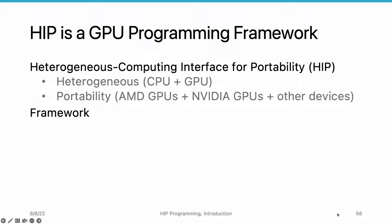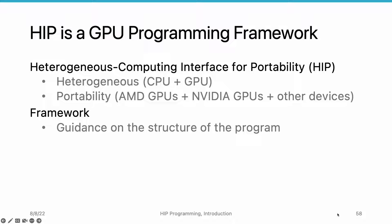We say HIP is a GPU programming framework. When I say a library or a tool is a software developing framework, I mean it can guide how to structure and write code to achieve desired goals. If you have developed a website before, you probably know React.js. If you follow the guidance provided by React.js, you can implement complex websites. It is the same for HIP. If you follow the guidance provided by HIP and write both CPU code and GPU code, you should be able to deliver a high-performance GPU implementation for your application.